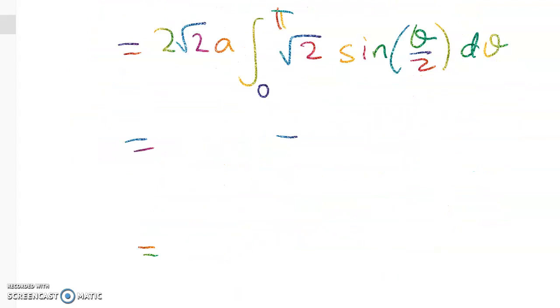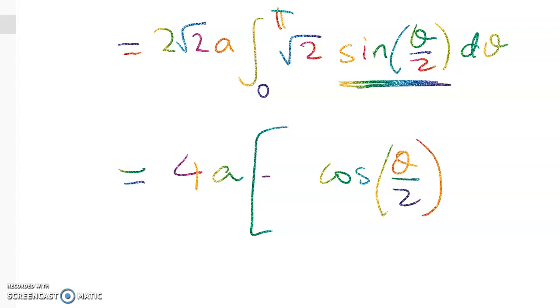Okay, so I'm just erasing that because I made a really dumb mistake. Let's keep on going with this. So collecting up these constants again we get 4a and then my integral here is going to be cos(θ/2) but it's got to be multiplied by negative and then it has to be multiplied by 2.